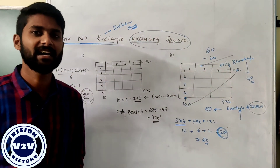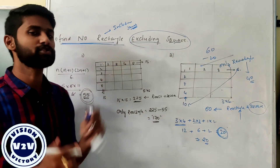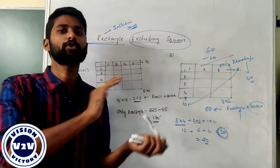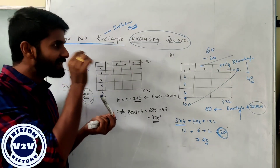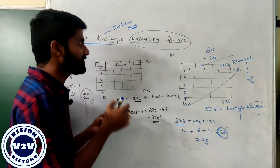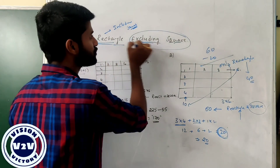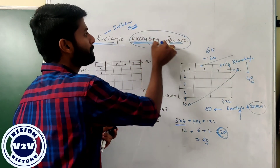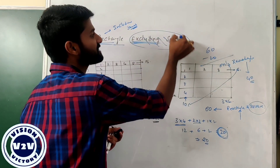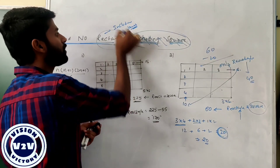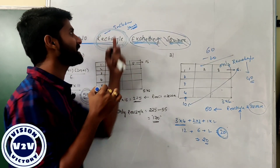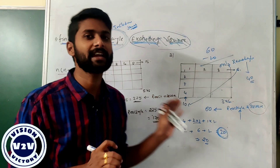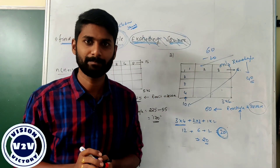That is the information. If a question asks to count rectangles, it is including squares. But if the question specifies excluding squares, then: total rectangles including squares minus number of squares gives only rectangles. This is the counting approach for rectangles. Thank you.